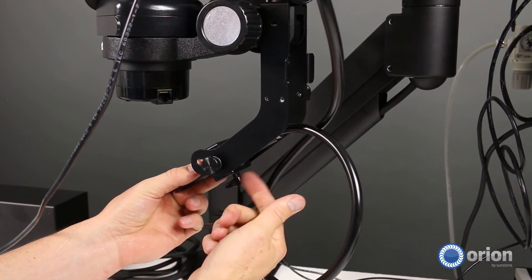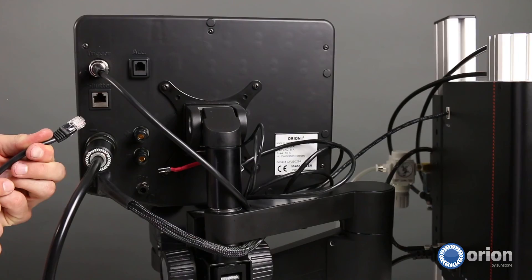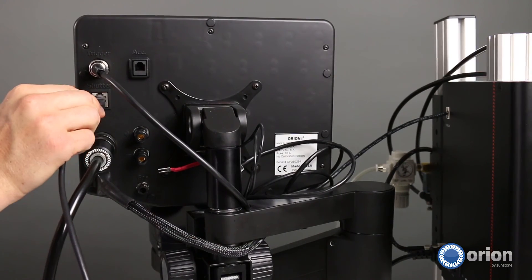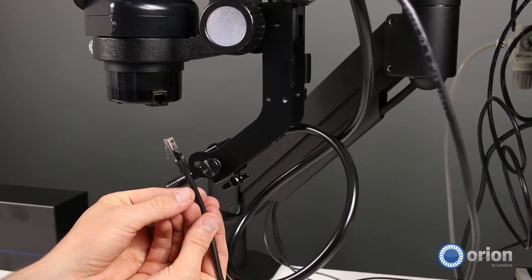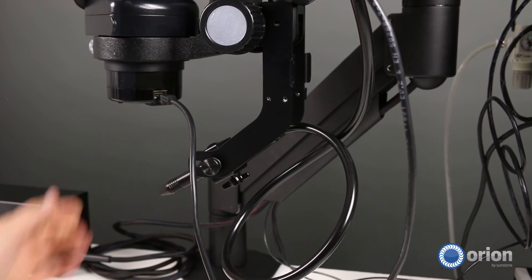Tighten the dial to secure the stylus in place. Plug in the RJ45 cord into the shutter port on the back of the welder and the other end into the base of the microscope.